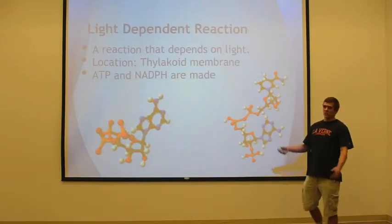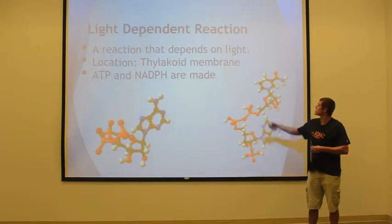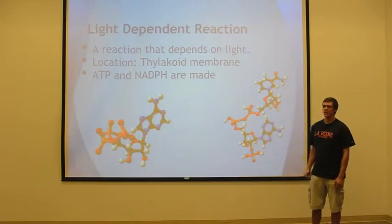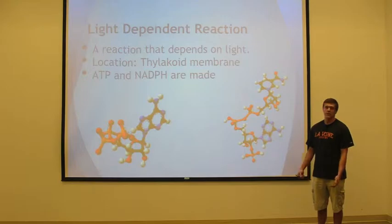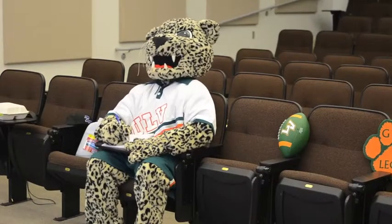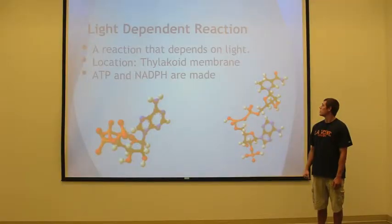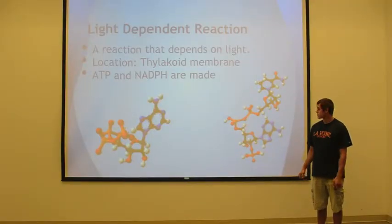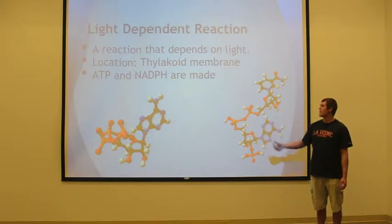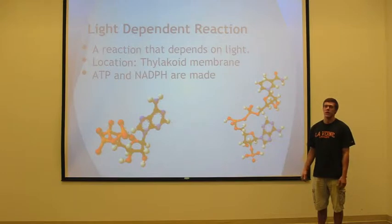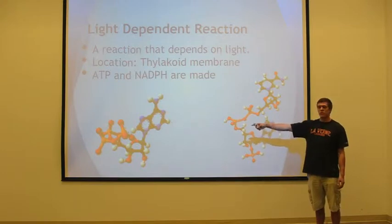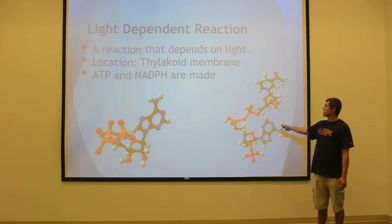Hello everybody, I'm Alex Miller. This is a light-dependent reaction. A light-dependent reaction is a reaction that depends on light. The location is the thylakoid membrane, which is in the chloroplast. ATP and NADPH are made, then they enter the stroma for the light-independent reaction. Over here is ATP, and right here is NADPH.